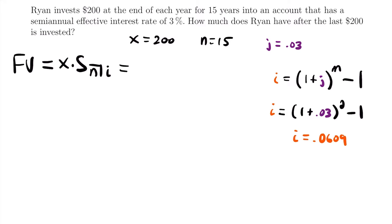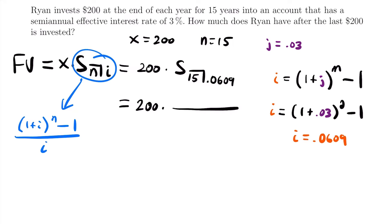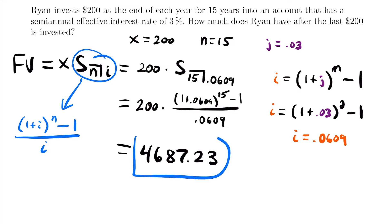Now we know this is going to be equal to 200 times S with 15 payments and interest rate 0.0609. Using the formula that S_{n|i} equals (1 plus i)^n minus 1, divided by i, this becomes 200 times (1 plus 0.0609)^15 minus 1, divided by 0.0609. Plugging that into the calculator, the future value equals $4,687.23. That is the future value of the series of payments or investments that Ryan is making.